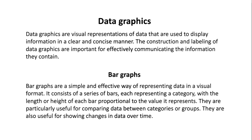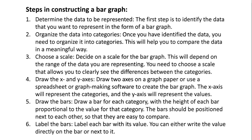Bar graphs are a simple and effective way of representing data in a visual format. A bar graph consists of a series of bars, each representing a category, with the length or height of each bar proportional to the value it represents. They are particularly useful for comparing data between categories or groups, and also for showing changes in data over time.